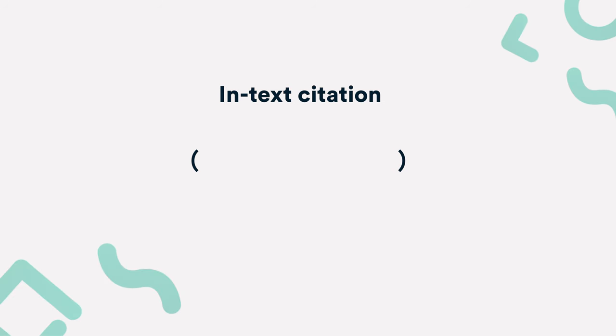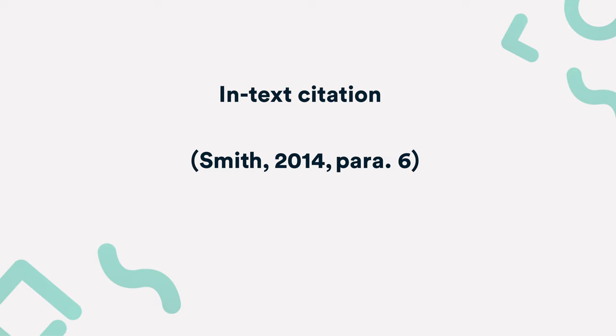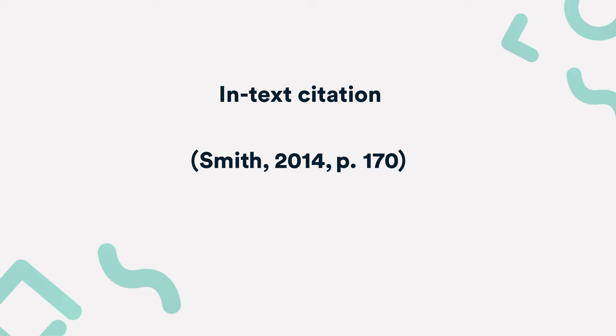The in-text citation consists of the author's last name, the publication year, and if you're citing a specific part of a source, the page number or other locator, such as a timestamp, paragraph number, or even a heading. Page numbers are not required when you're referring to the source as a whole. By the way, you can generate your in-text citation super easily with Scribbr's free citation generator.